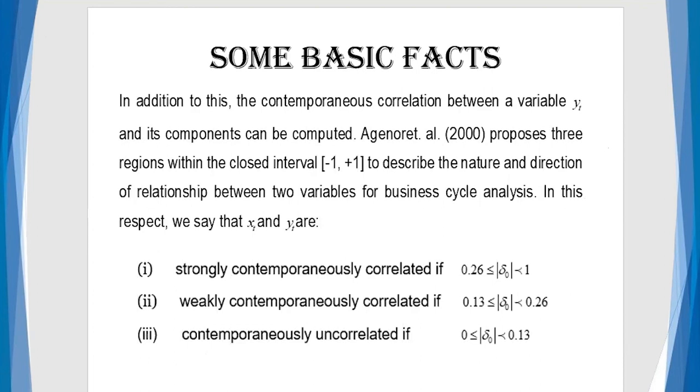And this is very important. Now, in addition to this, the contemporaneous correlation between the variable y_t and its component can be computed. Now, before I go away, the issue of pro-cyclical, counter-cyclical, are very determined to business cycle and to DSGE modeling. Because most of the observation you have, you have to know whether there is a co-movement between GDP and its various components. So, in addition to the contemporaneous correlation between a variable y_t and its components, yes, that means you can calculate what we call contemporaneous correlation between two variables.